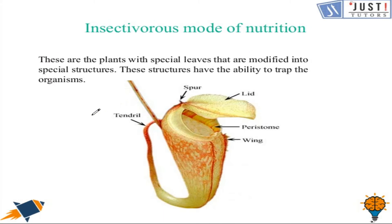Insectivorous mode of nutrition: there are some plants which are unable to synthesize the nitrogenous nutrients required by them. To meet this requirement they consume insects. Such insect-eating plants are called insectivorous plants. These plants have special leaves modified into structures that trap organisms. For example, the Venus flytrap and the pitcher plant are insectivorous plants. The Venus flytrap feeds on small animals and insects to obtain nitrogen and other nourishment.